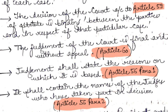Per Article 59 of the statute, the decision of the court is binding between the parties and in respect of that particular case only. Per Article 60, the judgment of the court is final and without appeal.